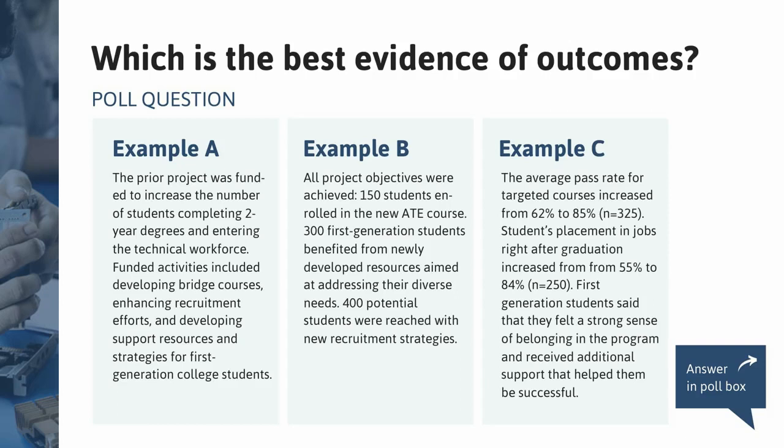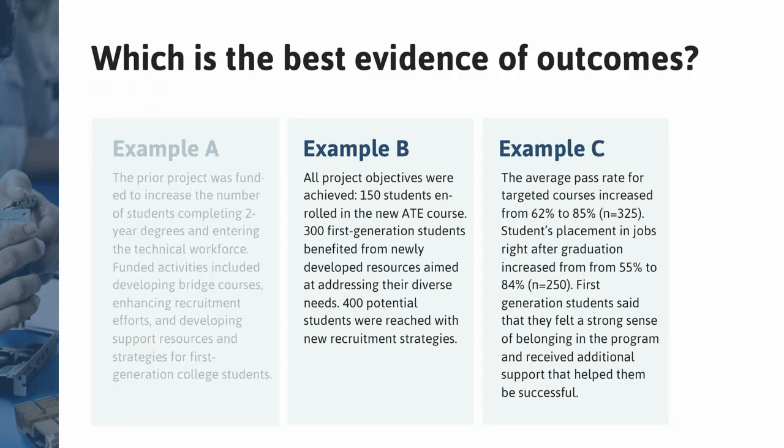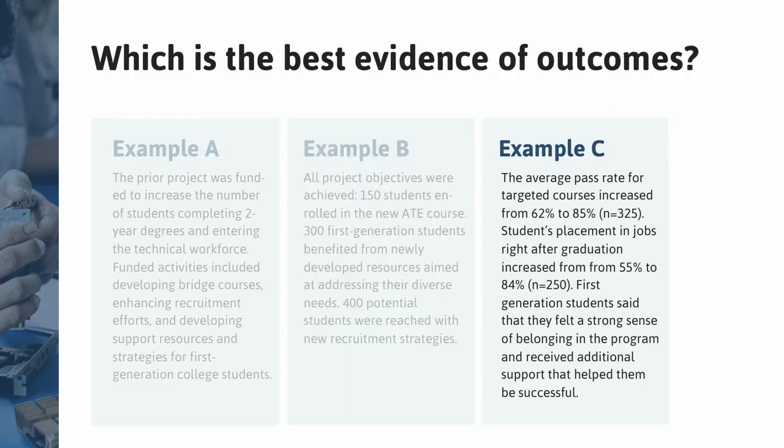All right, I see that a majority of our participants today have responded to the poll. So let's go ahead and take a look at each of these examples more closely. So example A only said what they were funded to do. So Celeste Carter, who is the NSF ATE program lead, said that this is all too common in ATE proposals. People kind of just cut and paste from their prior proposal, talking about what they're going to do and not necessarily providing evidence of what they've done. So this wouldn't be considered compelling evidence of outcomes. Example B only reports on activities. So it includes a lot of numbers. 150 students enrolled, 300 students benefited, 400 potential students. These are great, but they're just counts of what happened. And so there isn't actually any evidence of what happened to the student as a result of these activities. In example C, it answers the question of, so what? So what happened to those students after they participated? Their pass rates increased. They got jobs. It includes evidence of what changes were brought about because of the project. So this is the type of evidence that you want to aim for.